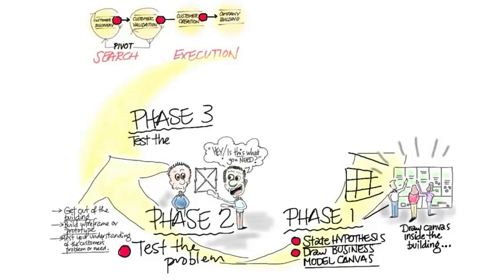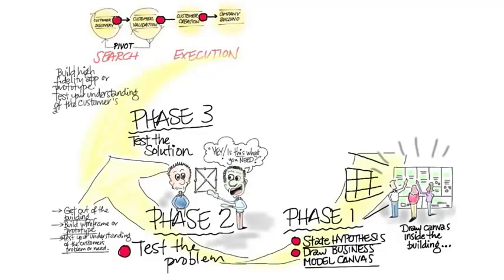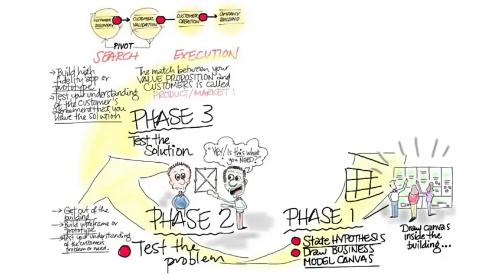The next thing is you're going to test the solution. You're going to test the solution if you're on the web by building a low-fidelity and then a high-fidelity prototype. And you're going to, again, test your understanding of the customer's needs and whether your solution matches it. And this match, again, is called product market fit. That's the holy grail for entrepreneurs. Am I building something that people can't get enough of or are just willing to open up their wallets and empty it in front of you to get their hands on?